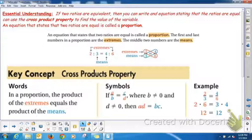So when you have two equivalent fractions or two equivalent ratios, another name for a fraction is a ratio, you can use the cross product property.